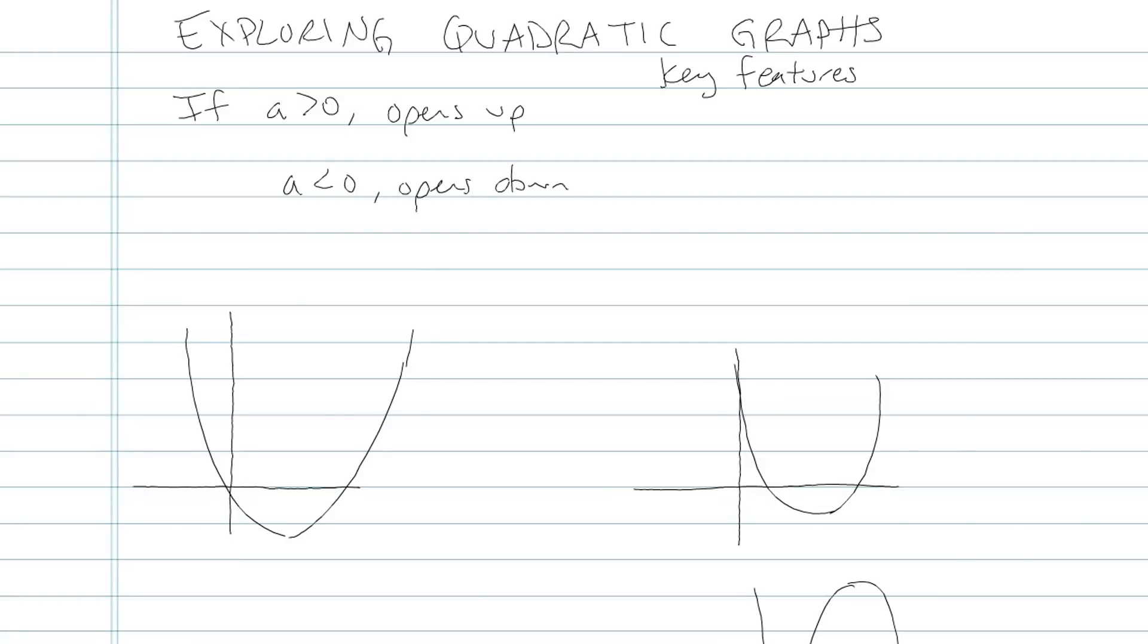This pencast is about exploring key features of quadratic graphs. Anytime you have the highest exponent of your equation, x squared, you're going to have the graph that's a parabola. A parabola is the U-shape thing. It's always going to be symmetrical, and it has a whole bunch of properties that we're going to go through.